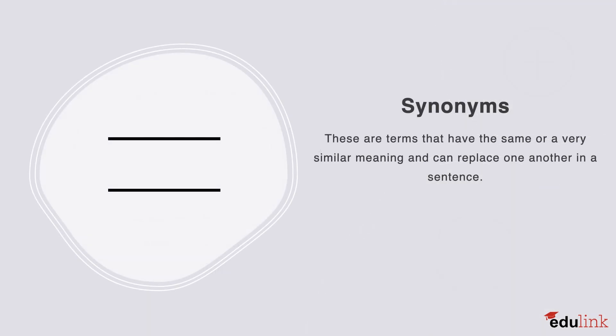On the other hand, we have synonyms, which are the opposite of antonyms. These are terms that have the same or very similar meaning, and they can replace one another in a sentence. So they're interchangeable. For example, to understand and to comprehend, to remember and to recall, and hardworking and diligent.